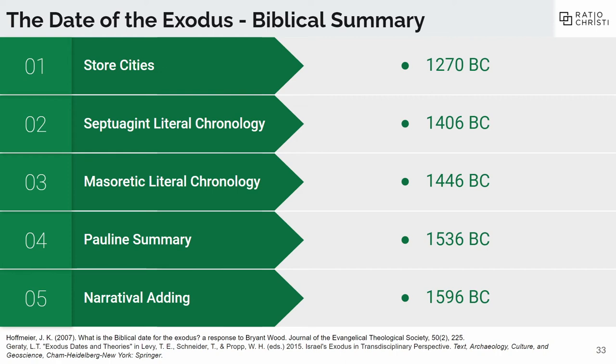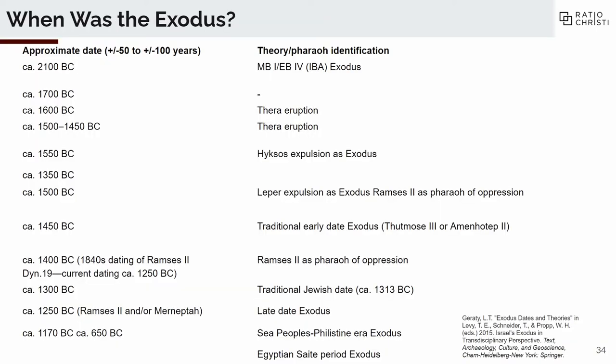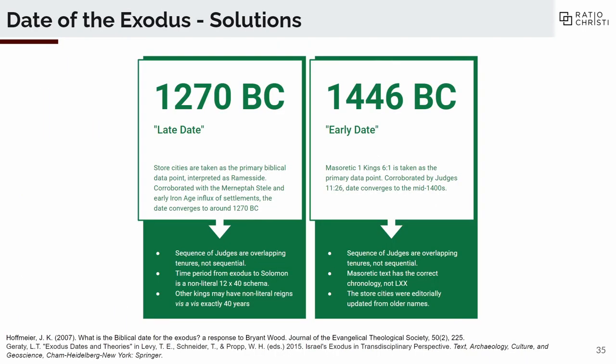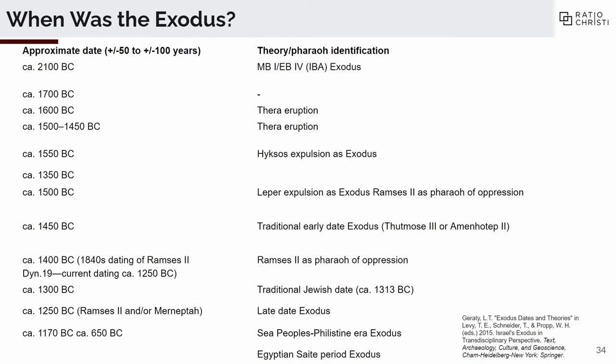I've just shown you five independent approaches for calculating when the Exodus happened, and they all kind of disagree with each other. All of them are from the Bible, with the exception of the one data point that Solomon is dated to 966 BC. There are even more views that incorporate more data — some people push it all the way back to 2100 BC, and some bring it all the way forward to even 650 BC. In full transparency, I don't think all of these are created equal. Some are better than others. But this is just to get you to realize that the question of the date of the Exodus is not straightforward.